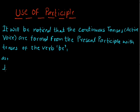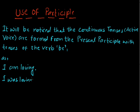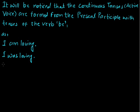For example, when I say 'I am loving', 'loving' is the present participle used in the present continuous tense. When I say 'I was loving', again 'loving' is the present participle used in the past continuous tense. And when I say 'I shall be loving', 'loving' is the present participle used in the future continuous tense.